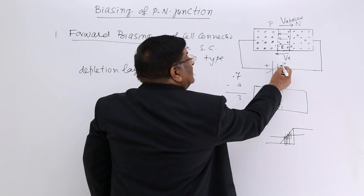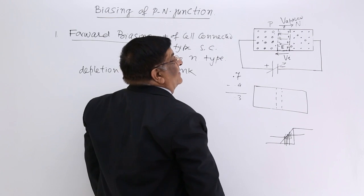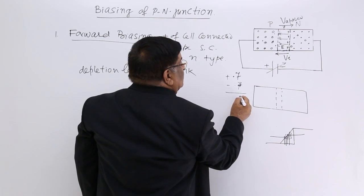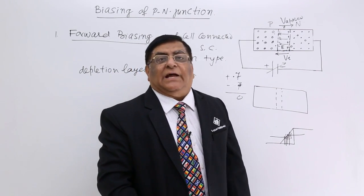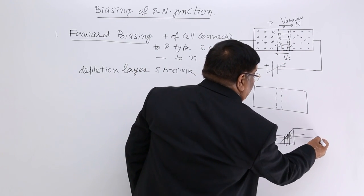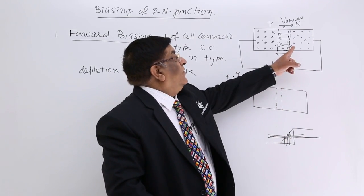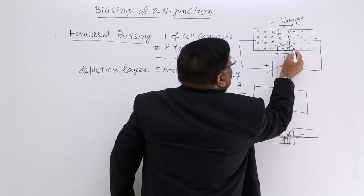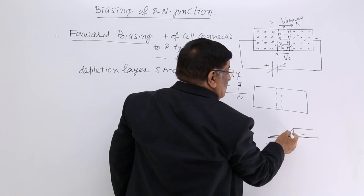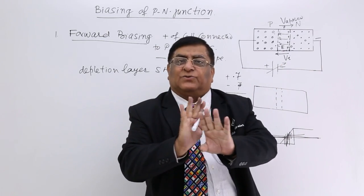If we increase the applied voltage further to 0.7V, and the potential barrier is also 0.7V, the resultant becomes zero. That means there is no potential barrier — both potentials have become the same level. Now all the electrons jump across. The depletion layer shrinks and shrinks until there is no layer — the layer has completely collapsed.